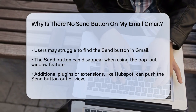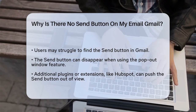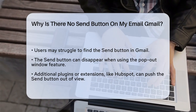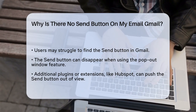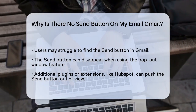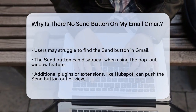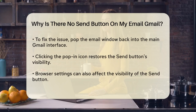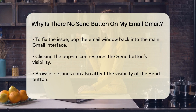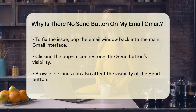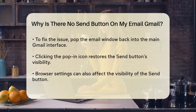Sometimes the send button can disappear when you're using the pop-out window feature in Gmail. This often happens when you have additional plugins or extensions, like the HubSpot plugin, which can add extra rows and push the send button out of view. To resolve this, try popping the email window back into the main Gmail interface — this usually restores the send button to its normal position. Simply click on the pop-in icon to bring the email back into the main window, and you should see the send button again.